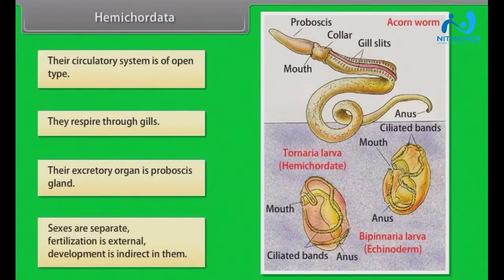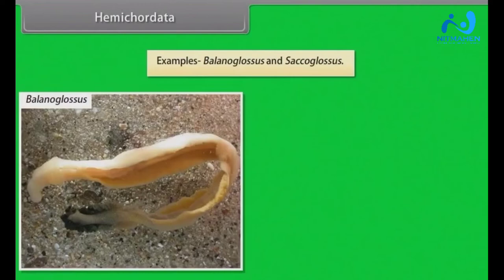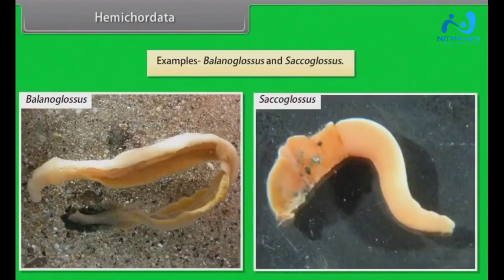Fertilization is external. Development is indirect in them. Examples: Balanoglossus and Saccoglossus.